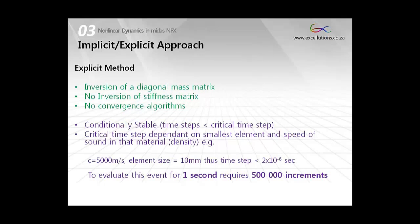Pros and cons for the explicit method is the inversion of a diagonal mass matrix. There is no inversion of a stiffness matrix. And we also do not use any convergence algorithms or checks. On the downside, it is conditionally stable. We have to make sure about those time steps. And those time steps are actually being determined by the speed of sound in that specific material, as well as the smallest element length. And I am showing there at the bottom a small example when the code is actually calculating this. You can see that for element size of 10 millimeters, speed of sound in the specific material at 5,000 meters per second, a critical time step of 2 to the minus 6 seconds is calculated. If we evaluate this event for one second, we are going to require about 500,000 increments.